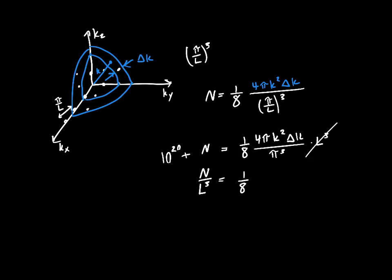So the density of states is just this, 4 pi k-squared delta k, and let's also cancel out one of the pi's, so this becomes pi-squared. So 4 k-squared delta k divided by pi-squared.